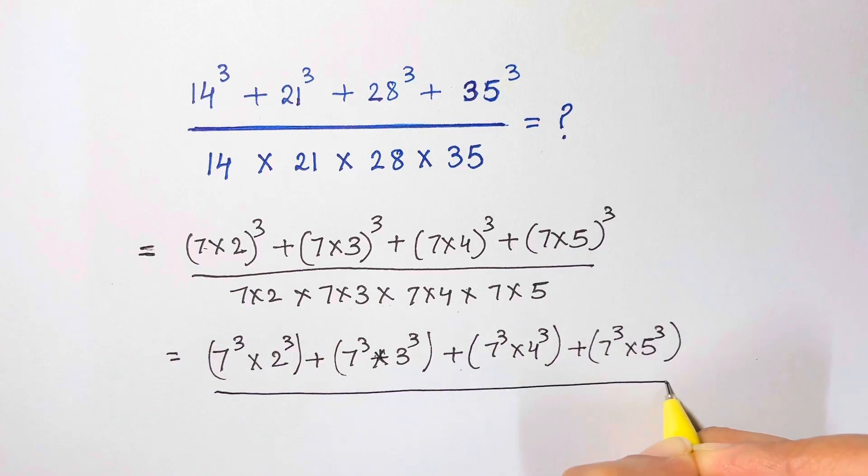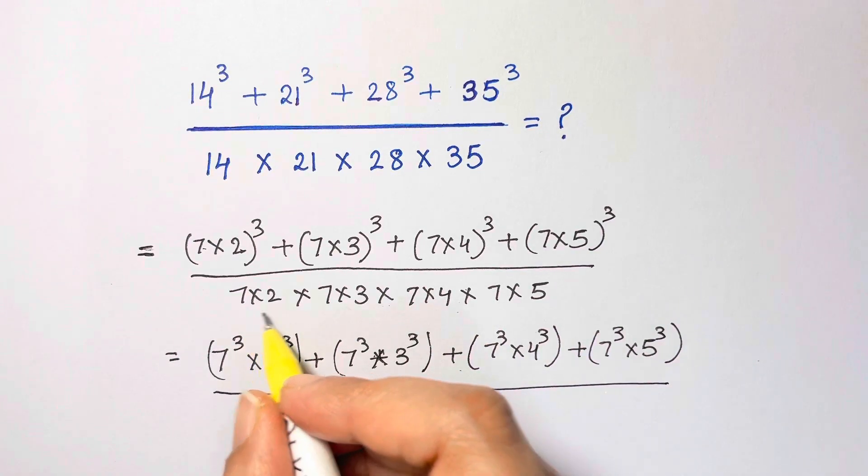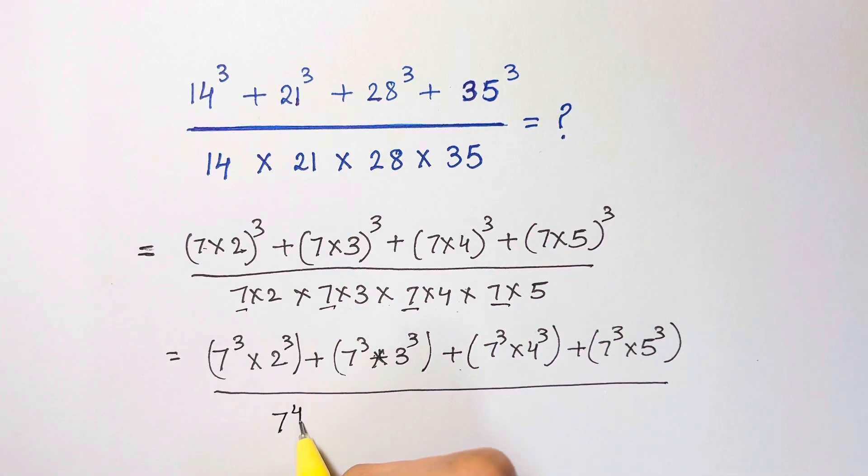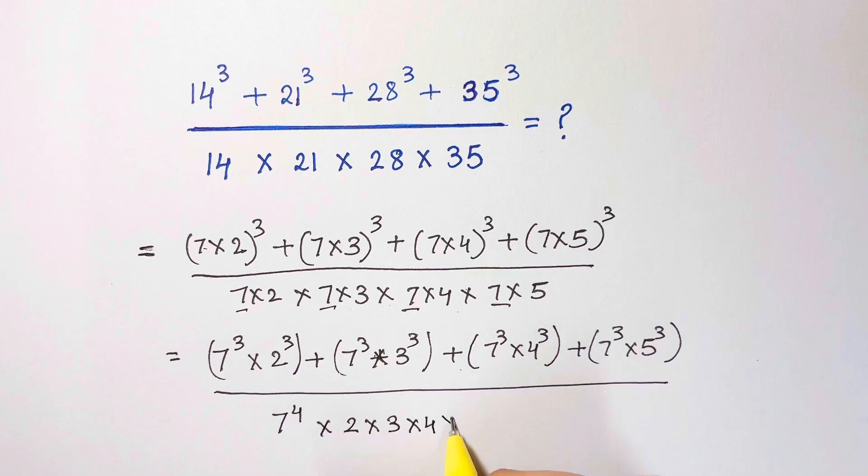Over, then I have 7 to the power of 4 times 2 times 3 times 4 times 5.